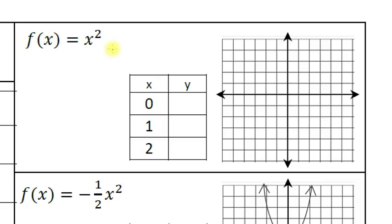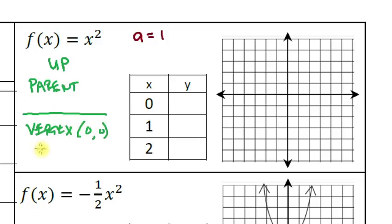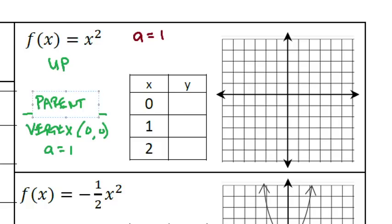Let's do some examples. Here's f(x) = x². The a value equals 1. From our work, when a equals 1 the parabola faces up and it's not stretched or compressed — so this is the parent shape. The parent graph has its vertex at (0, 0) and an a value equal to 1. There is no h or k, no b or c, so the vertex is at the origin. This is the graph we compare every other graph to.